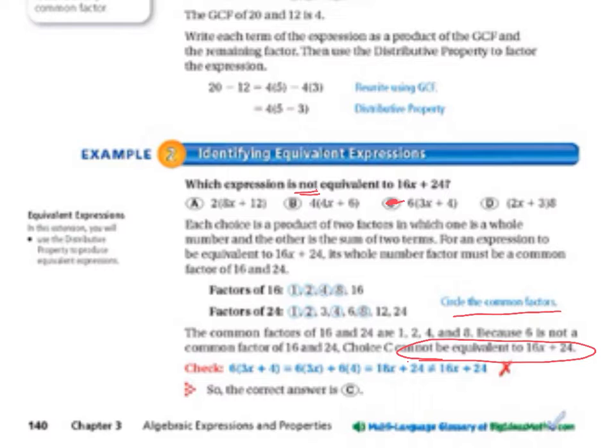We should always check our answer. We're going to multiply it out. 6 times 3x plus 4, 6 times 3x plus 6 times 4 equals 18x plus 24. That does not equal 16x plus 24. So, the correct answer is C.